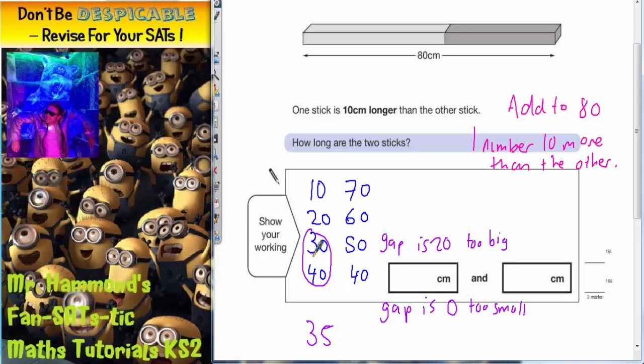So if one of the sticks was 35, the other stick, to get it up to 80, would need to be 45. Because 35 and 45 makes 80.